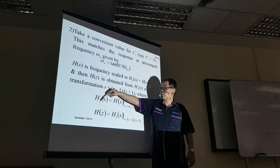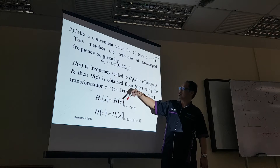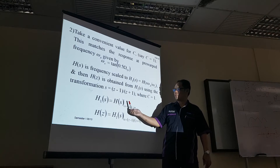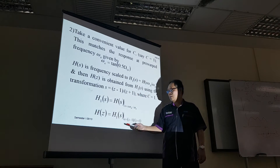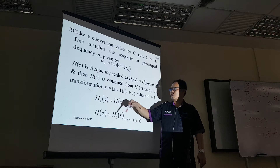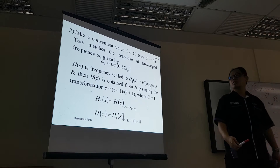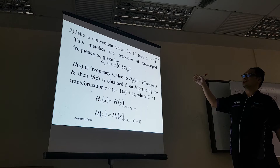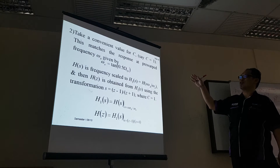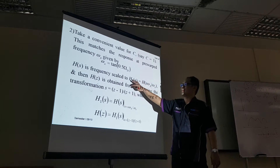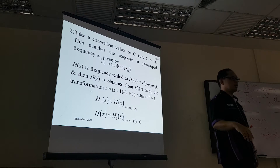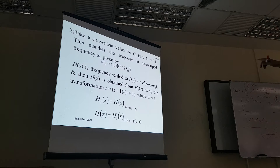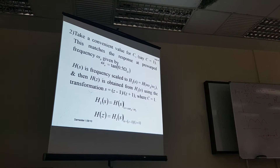With Method 2, H1 comes from scaling H(S). Because you scale H(S) to H1, and then from H1 you find H(Z). So there are two methods: one assumes C equals 1 but requires pre-warping and scaling; the other calculates C as in Method 1, so you don't need the pre-warping or scaling step.